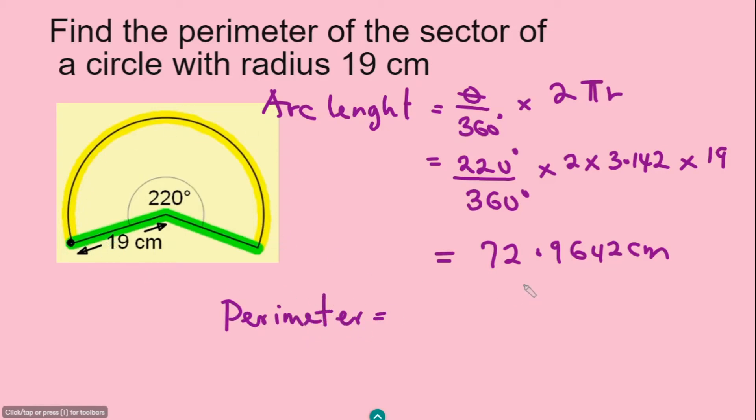So the perimeter becomes 72.9642 plus one radius 19 and another radius here 19. And now if you add all these values, you're going to have 110.9642 centimeters. And because we're still dealing with the perimeter, which is actually the distance around, the metric unit is going to be in centimeters.